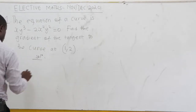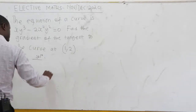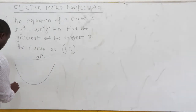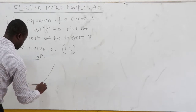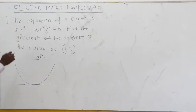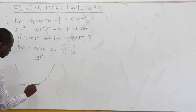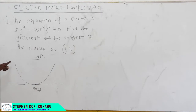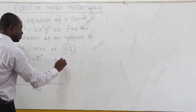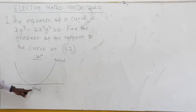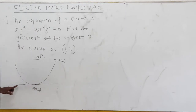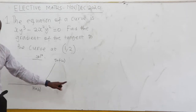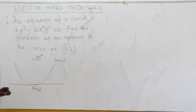Now let's suppose that we have a curve, and this is the tangent. If we have a point, let's call it A, B — the gradient of the curve at point A, B is the same as the gradient of the tangent at that point.